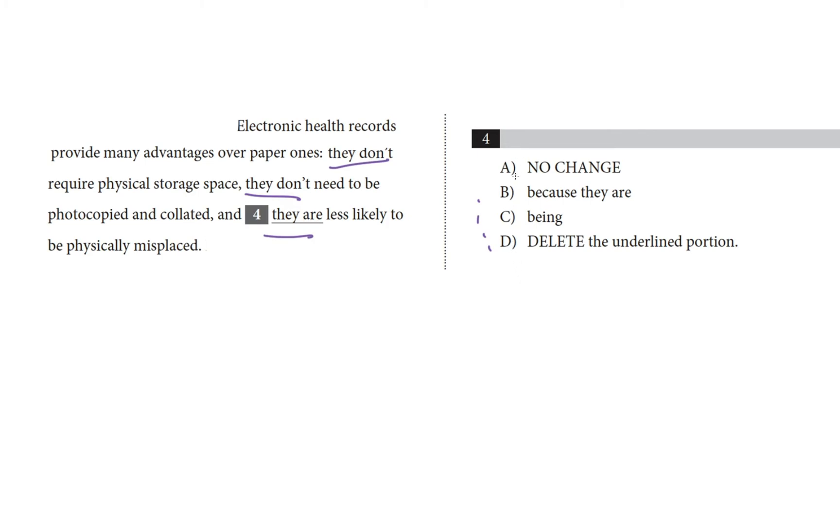So, what matches that pattern? They are, choice A, kind of matches it, let's leave it in. Choice B, because they are. This has the they verb construct, but introduces a because, which breaks the pattern. Cross it off. Simple as that. Choice C, being. Let's plug it back into the sentence. They don't need to be photocopied and collated, and being less likely to be physically misplaced. This breaks the pattern, and breaks the parallel structure. Nope. Let's cross it off.